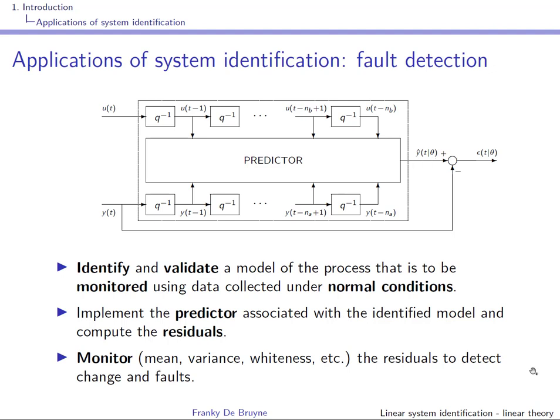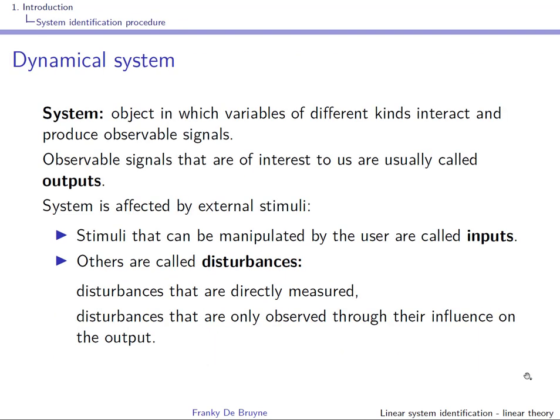The predictor is constructed from past inputs and past outputs. You can use a linear predictor and apply the ideas of this course, or do more complicated things using the nonlinear identification ideas from Thomas Museur's course — for instance using a neural net for prediction.